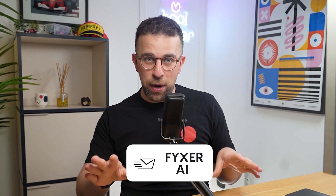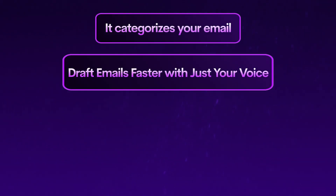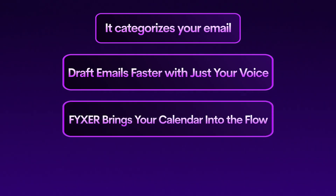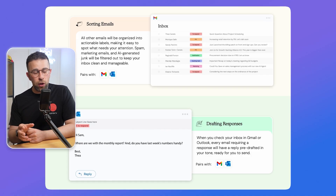Fixer — spelled a little bit strangely — is an AI assistant that does three things: it categorizes your email, it helps create drafts saving you time using your voice, and it brings in calendar functionality a bit like Calendly. It also has an AI meeting assistant that transcribes your notes and sends them to people from that meeting.